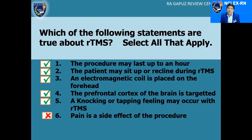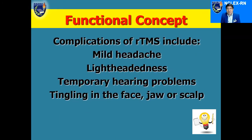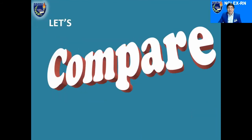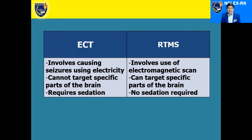Functional concept: Complications of RTMS include mild headache, lightheadedness, temporary hearing problems, and tingling in the face, jaw, or scalp. The big difference is that ECT causes temporary memory loss, while RTMS does not. In summary: ECT causes seizures using electricity; RTMS uses electromagnetic stimulation. ECT cannot target specific brain areas; RTMS can. ECT requires sedation; RTMS does not.